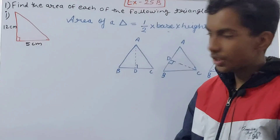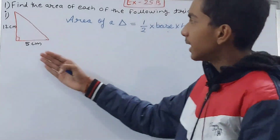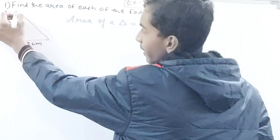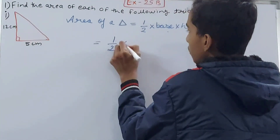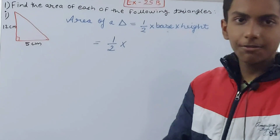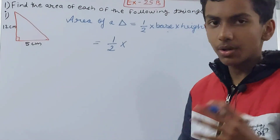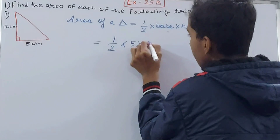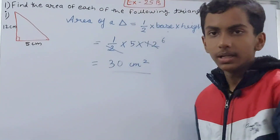We need to obtain the values of base and height to find the area. In this first triangle, you can see it is a right-angle triangle — half of a complete rectangle. The 12 cm is going perpendicular, so that is your height, and it is landing on the side of 5 cm, which is your base. Area = 1/2 × 5 × 12, which gives 30 square centimeters.